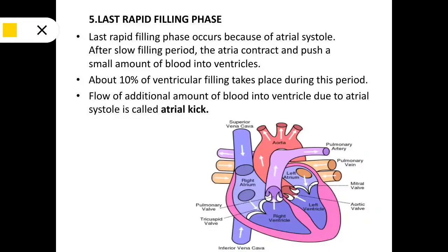The last phase is the last rapid filling phase, which occurs because of atrial systole. After the slow filling phase, the atria contract and push a small amount of blood into the ventricles. About 10 percent of ventricular filling takes place during this period. The flow of this additional amount of blood into the ventricle due to atrial systole is called the atrial kick.